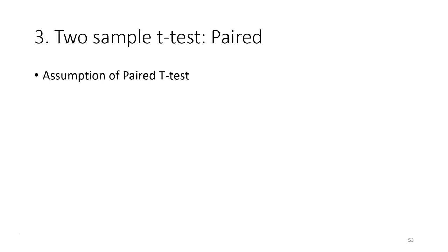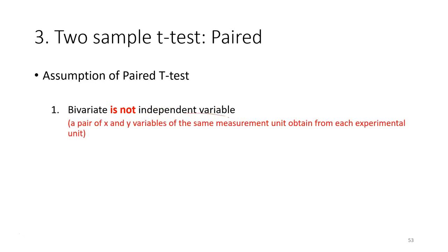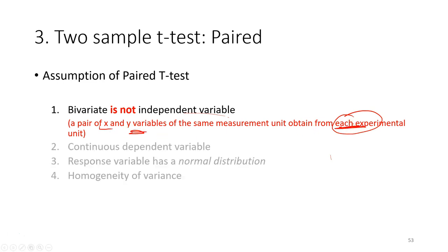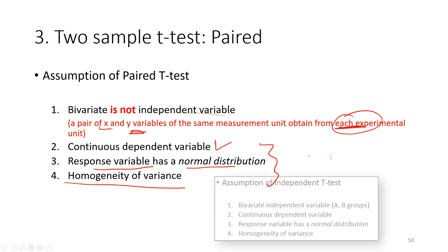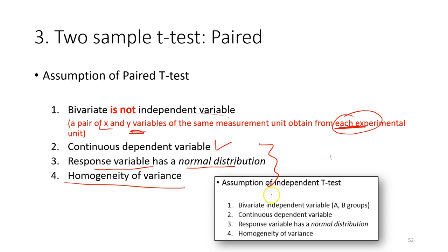There are a few assumptions for the paired t-test. The bivariate variables are not independent — a pair of the same measurement unit is taken from the same observation unit, so both variables are obtained from the same unit. The variable needs to be continuous, the response variable must have a normal distribution, and homogeneity of variance is required — these are the same assumptions as the independent t-test. The only difference is in the dependency structure.